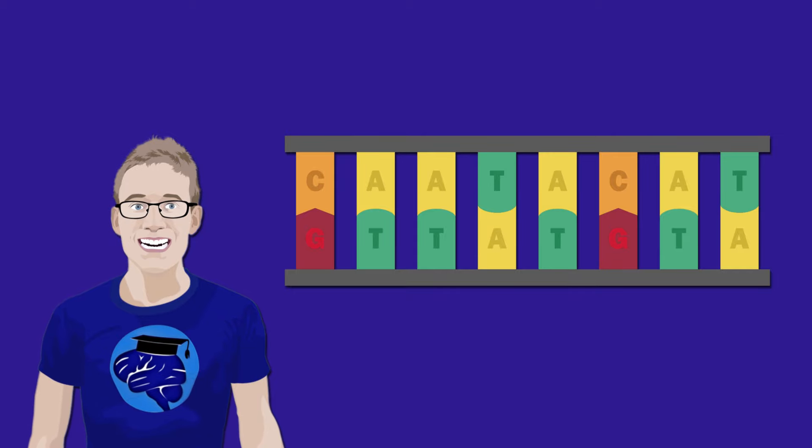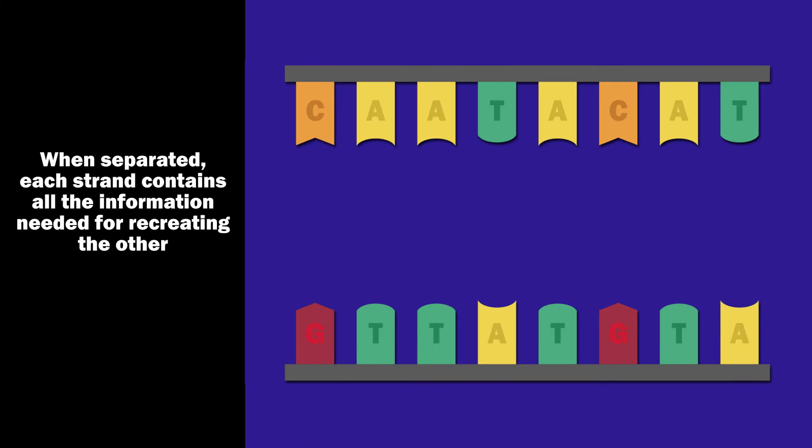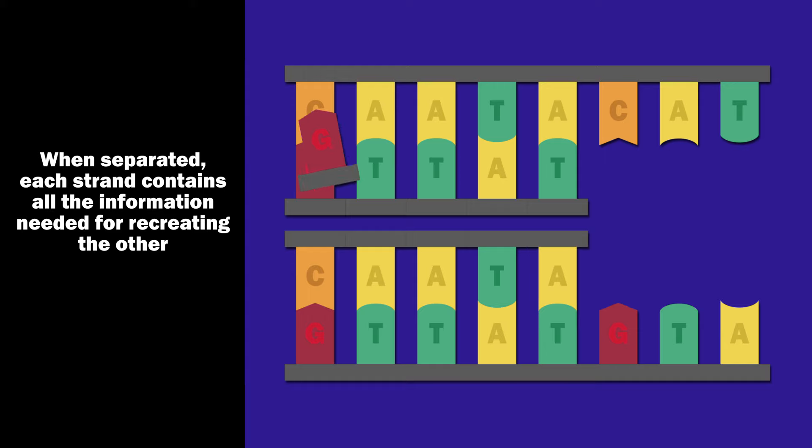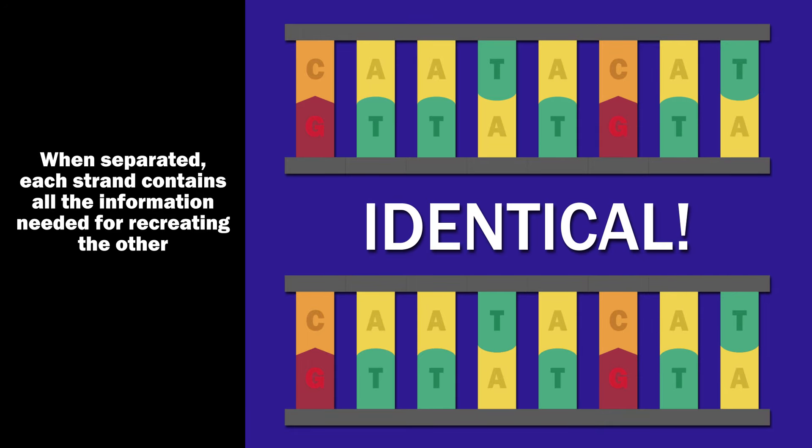Due to this complementary binding, each of the two DNA strands contains the exact same information. When the two strands are separated during DNA replication, each of them acts as a template which contains all the information needed for recreating the other.